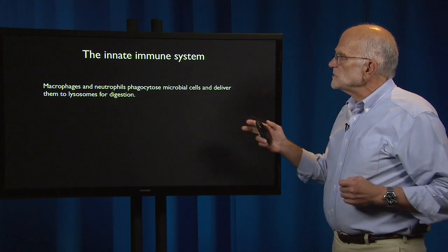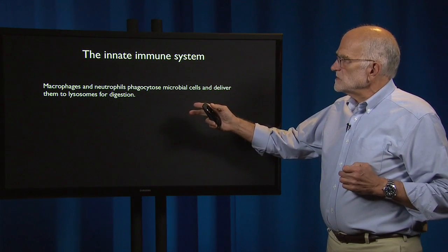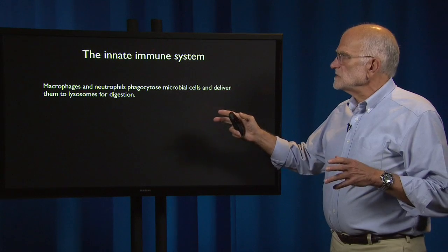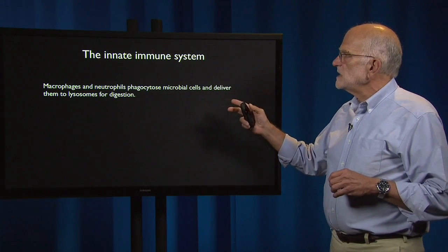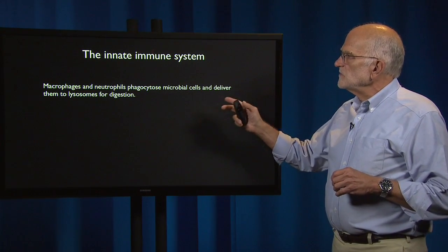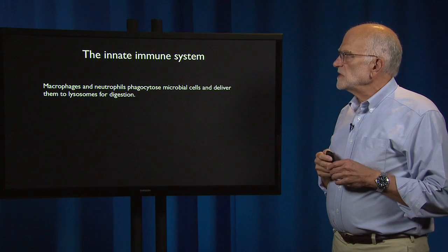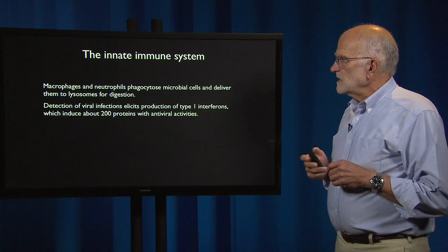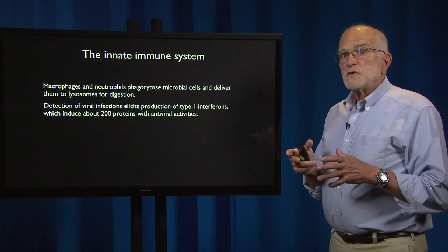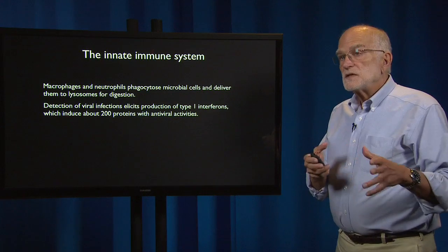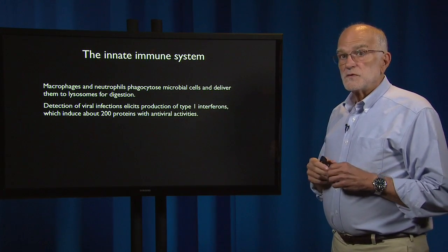The macrophages and neutrophils are cells that eat — that phagocytose — microbial cells, and they deliver them to the lysosomes for digestion. Lysosomes are organelles inside the macrophages and neutrophils.